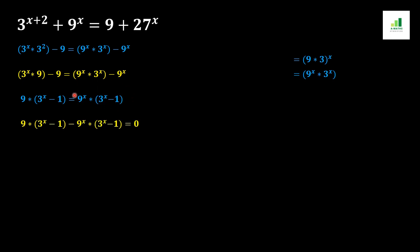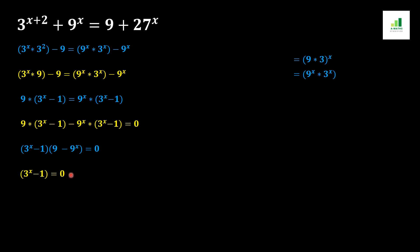We move this whole value to the other side of the equation — it converts to a minus sign — and we get equal to 0. Now we take (3 to the power x minus 1) as a common factor from the whole expression. We get the remainder 9 minus 9 to the power x, so we have: (3 to the power x minus 1) equals 0, and (9 minus 9 to the power x) equals 0.